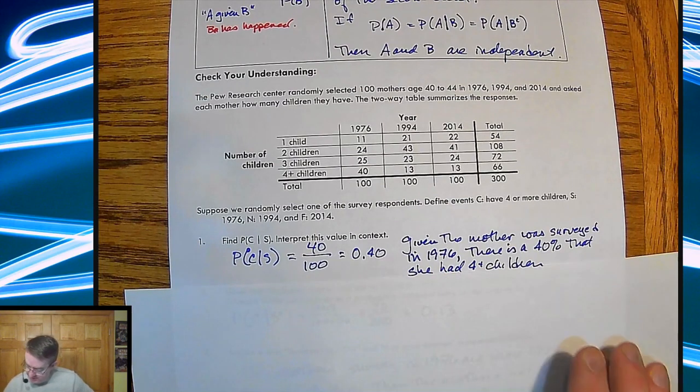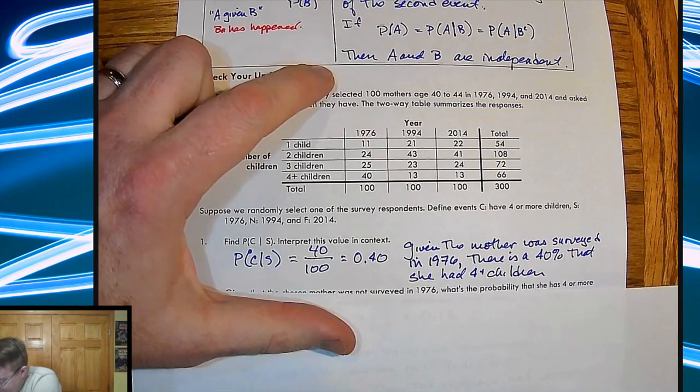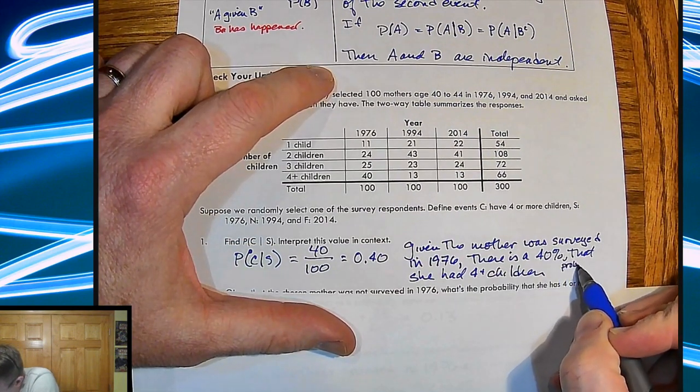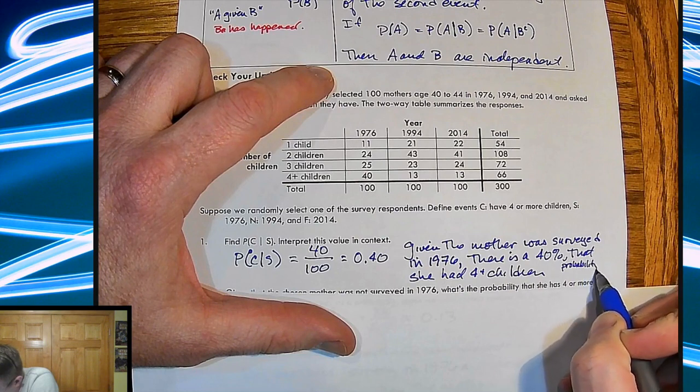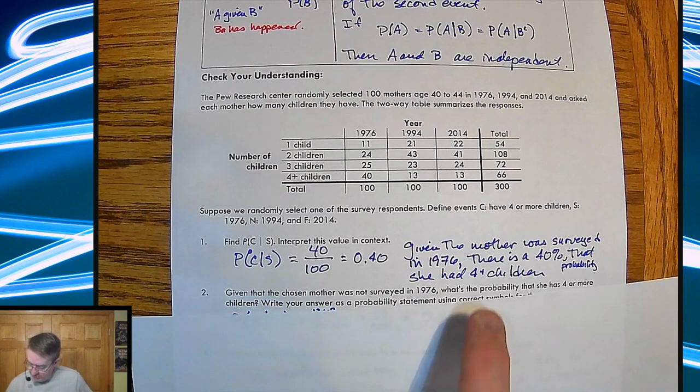How did I miss the word probability? I don't know. You'd think by this point, you guys, I'd be better. You guys deserve better than this. Anyway, that she had four or more children.